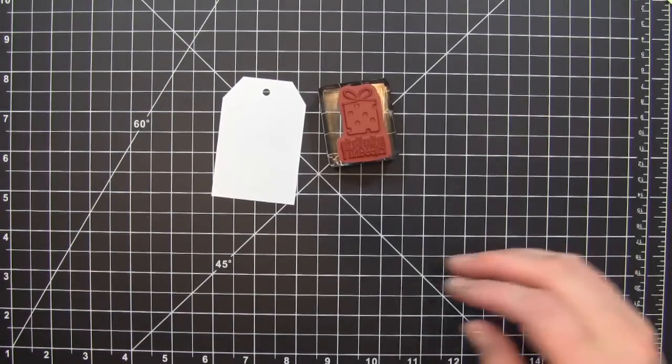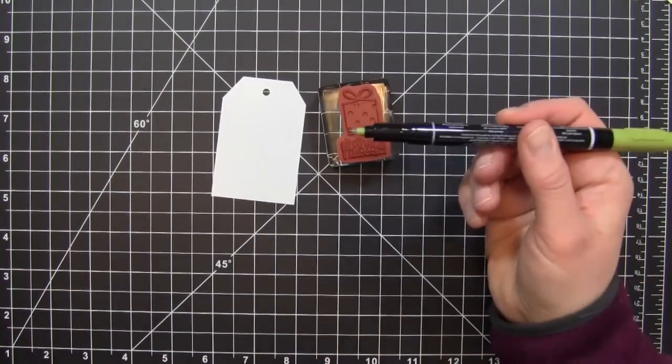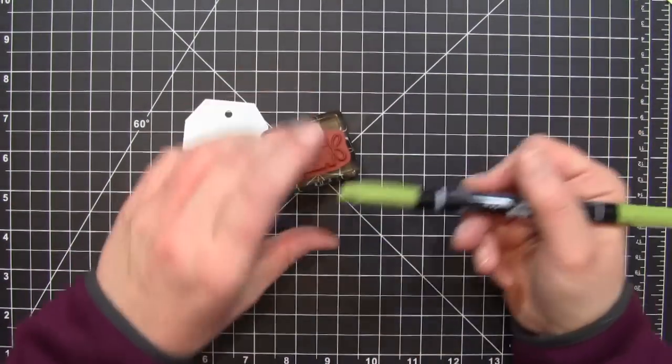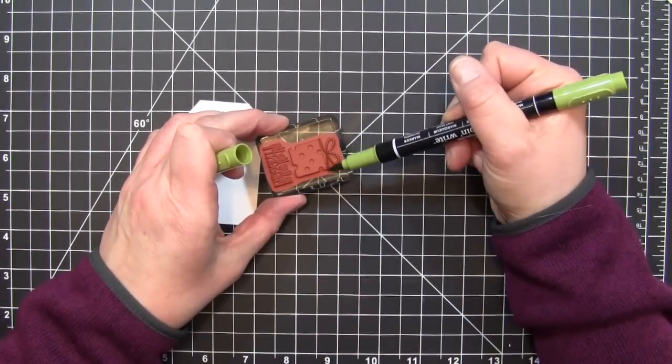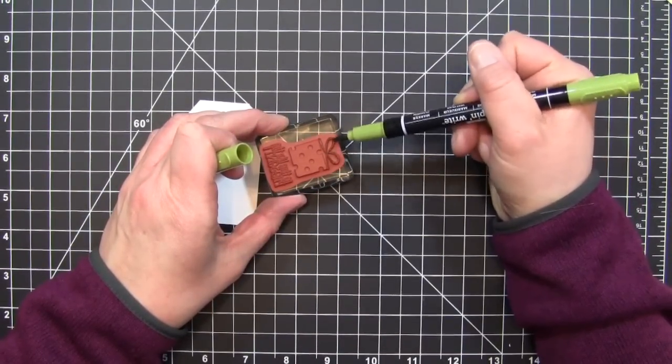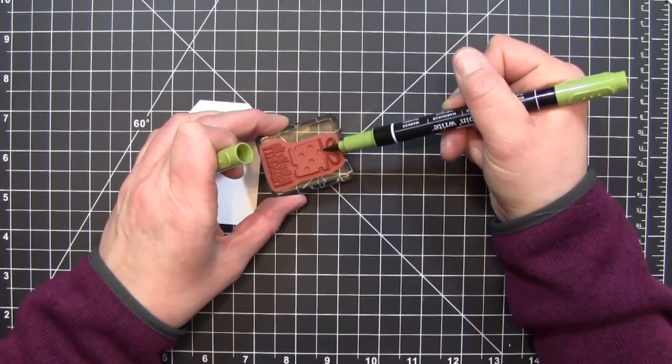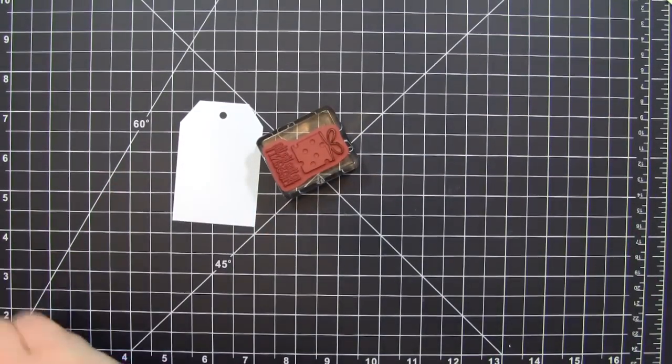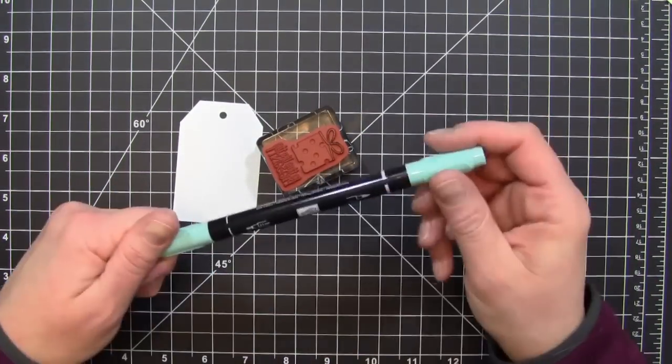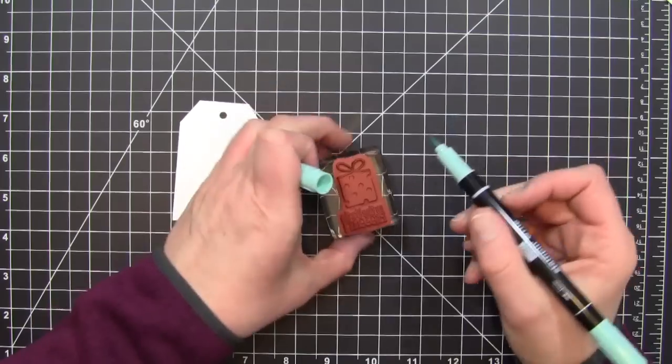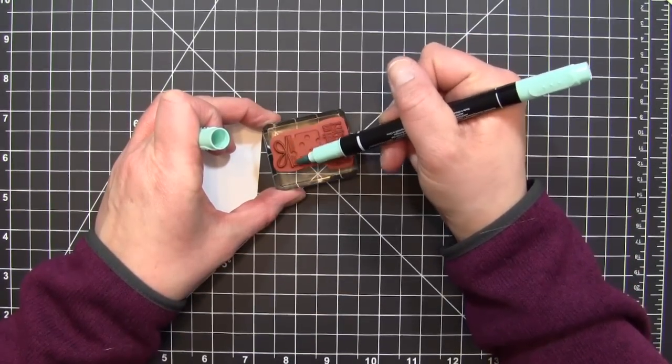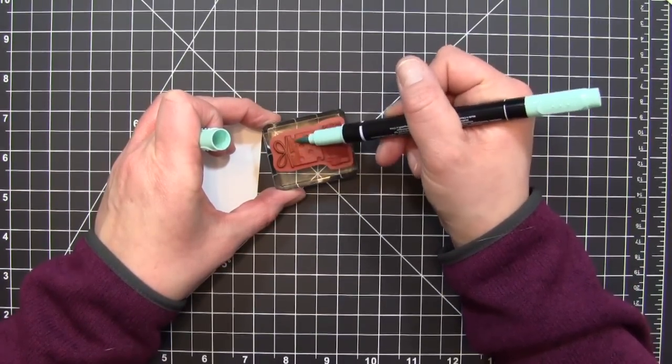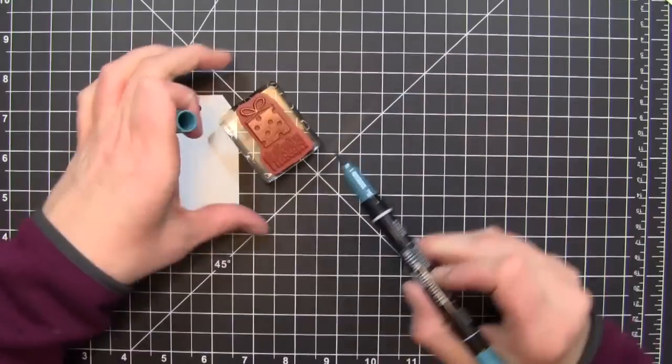Using the Big Wish stamp set, I'm going to be taking my Stampin' Write markers. For the bow, I'm using the old olive marker and I'm just going to use the brush tip to color in the bow. And then for the present part of the stamped image, I'm going to be using Pool Party. I just kind of went back and forth and it created a nice little texture when I stamped this out.